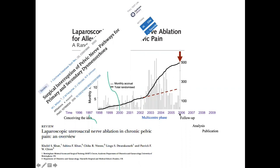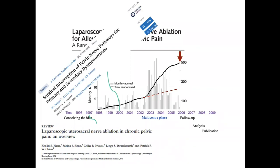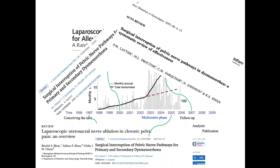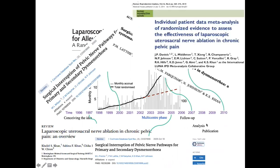During the course of recruitment of the patients, another systematic review was published by the Cochrane Collaboration on the same topic. A few years later, the systematic review was updated and republished — this was before recruitment finished. A further review was published as follow-up was being completed. And ultimately, after publication of this trial, an updated review — this time with individual patient data meta-analysis — was published. So you can see that alongside a primary study, there can be a series of systematic reviews published.